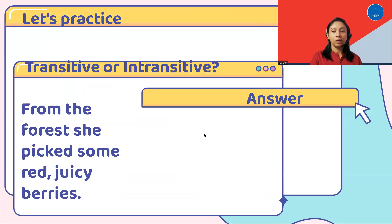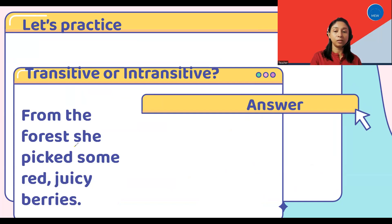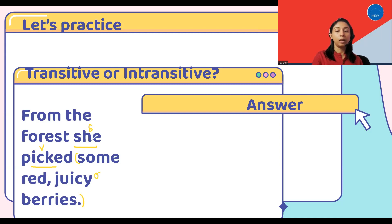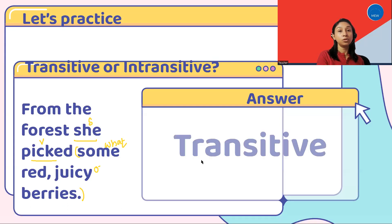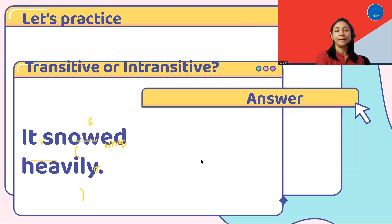Now let's practice. First sentence: From the forest, she picked some red juicy berries. She is the subject, picked is the verb, and some red juicy berries is the object. We can also apply the second method — 'She picked what?' — and we get the answer: some red juicy berries. So since we get an answer to 'what,' this is a transitive verb. Yes, that's right.